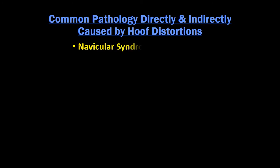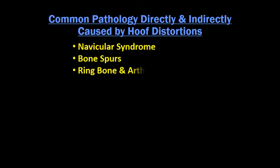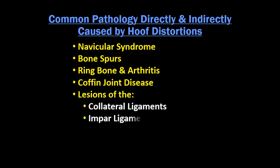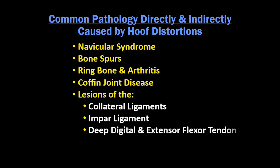Common pathologies directly and indirectly caused by hoof distortions include: navicular syndrome, bone spurs, ringbone and arthritis, coffin joint disease, lesions of the collateral ligaments, impar ligament, and deep digital and extensor flexor tendon.